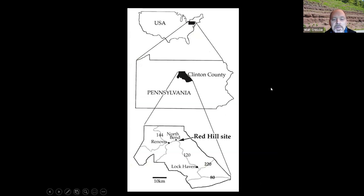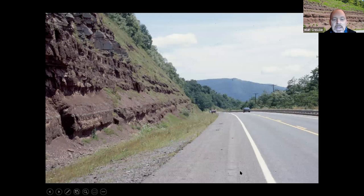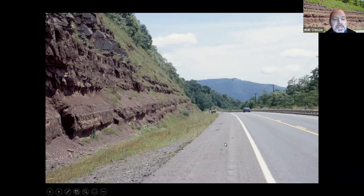Just to remind folks or let people know for the first time: Red Hill is a road cut in Clinton County in north central Pennsylvania, along state highway 120 and along the West Branch of the Susquehanna River, which goes parallel with state route 120. It's a road cut along 120 where you can just drive by and see a succession of layers, but to the casual observer you wouldn't necessarily know that it was a hotbed of the late Devonian Catskill Formation.